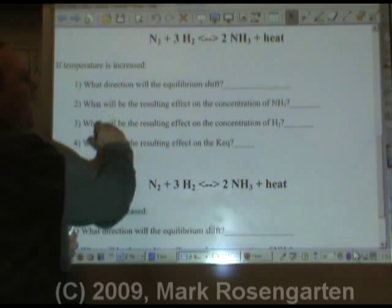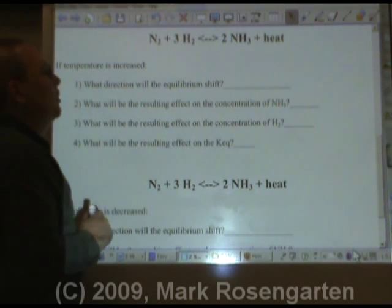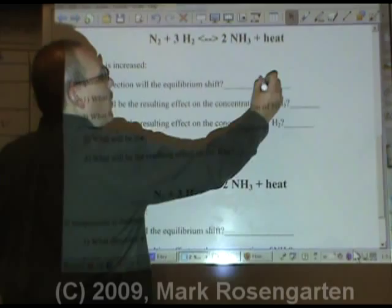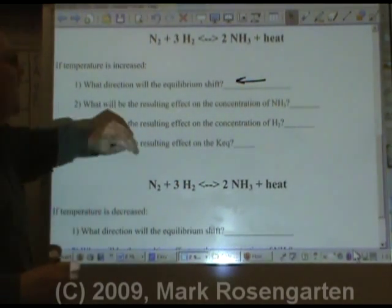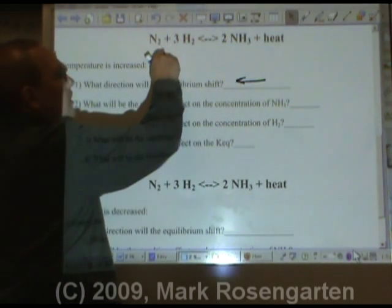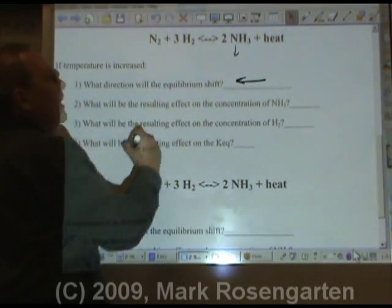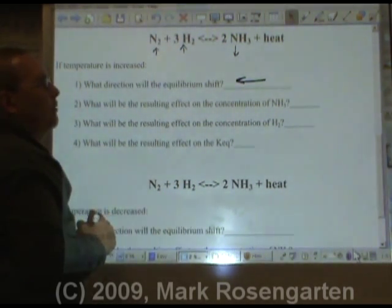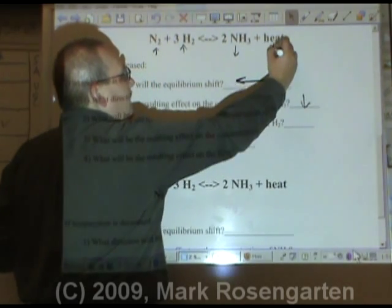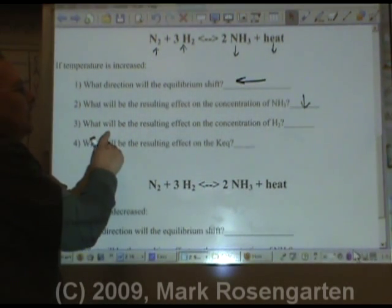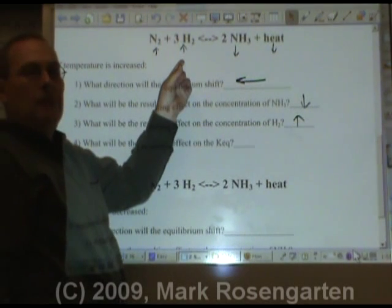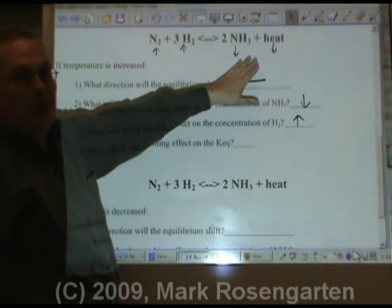For example, in this reaction, if you increase temperature, the equilibrium will shift in the endothermic direction to remove that excess temperature. The equilibrium will shift away from the side that has heat on it — increase the heat, it's going to move away from heat to use it up. As a result, whatever you shift away from gets used up, and whatever you shift towards, you make more of. So the concentration of NH3 will go down, and the concentration of H2 will go up, because you're shifting towards it.